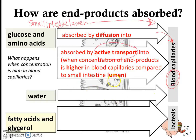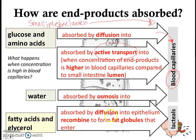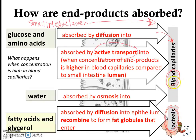Water is absorbed by osmosis — not diffusion, but osmosis — into the blood capillaries. Fatty acids and glycerol are absorbed by diffusion into the epithelium. Before they enter the lacteals, they recombine to form fat globules. So the key point is: glucose and amino acids are absorbed into the blood capillaries, while fatty acids and glycerol — the fats — are absorbed into lacteals.